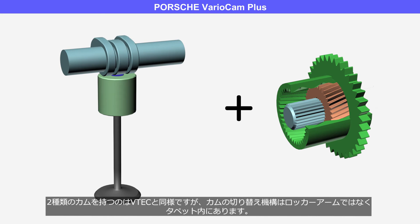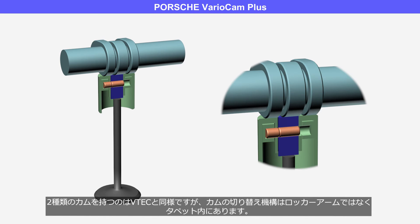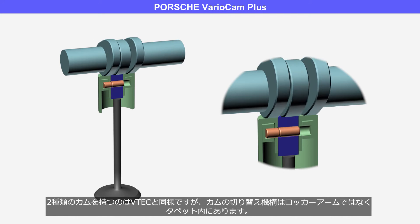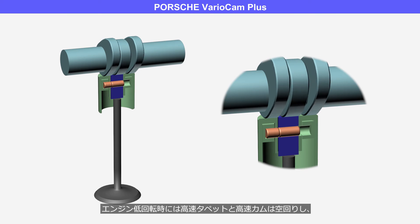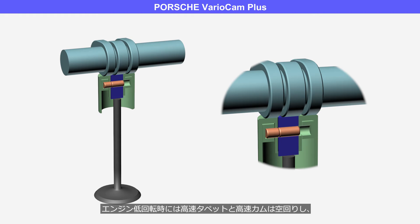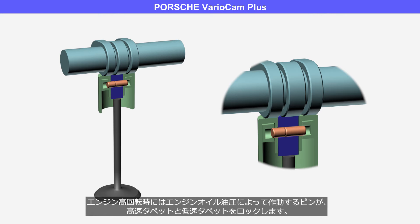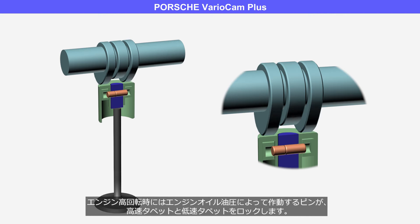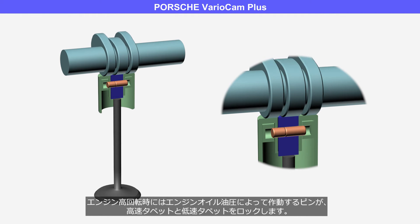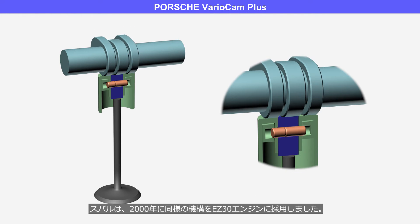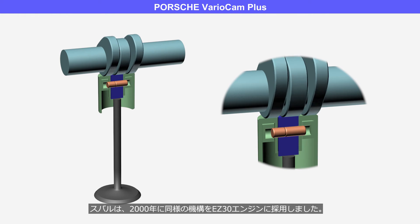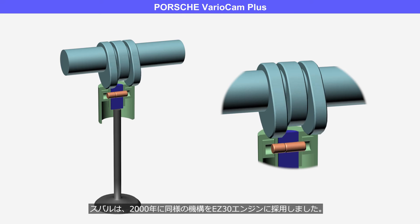Similar to VTEC, the VarioCam Plus features two different cams, but the cam switching mechanism is located within the tappet instead of the rocker arm. During low engine speeds, the high-speed tappet and high-speed cam idle freely. During high engine speeds, a pin operated by engine oil pressure locks the high-speed tappet and low-speed tappet. In the year 2000, Subaru adopted a similar mechanism for the EZ30 engine.